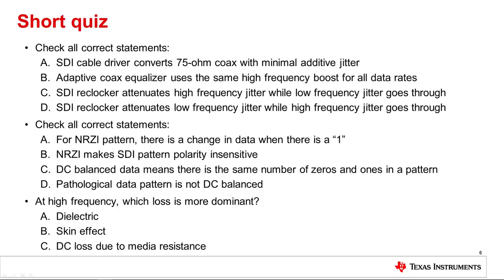C. DC balanced data means there is the same number of zeros and ones in a pattern. D. Pathological data pattern is not DC balanced. The correct answers are A, B, C, and D.